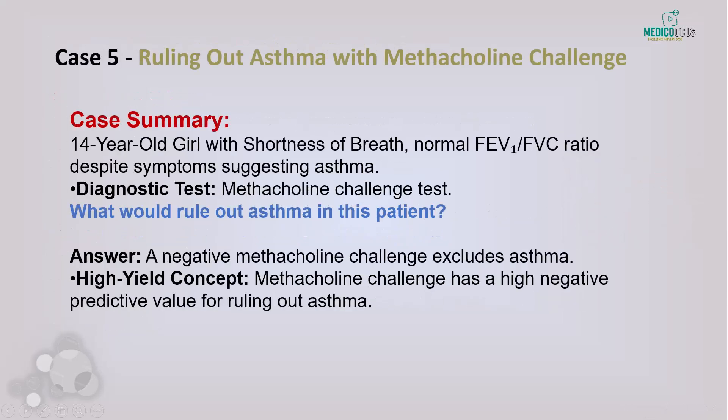Case 5: A 14-year-old girl with intermittent shortness of breath whose lung function testing shows a normal FEV1/FVC ratio, yet symptoms suggest asthma. To definitively rule out asthma, a negative methacholine challenge would be most helpful. Methacholine induces bronchoconstriction in patients with hyperreactive airways, so a negative test effectively excludes asthma. Methacholine challenge tests have a high negative predictive value — if the test is negative, asthma is very unlikely.